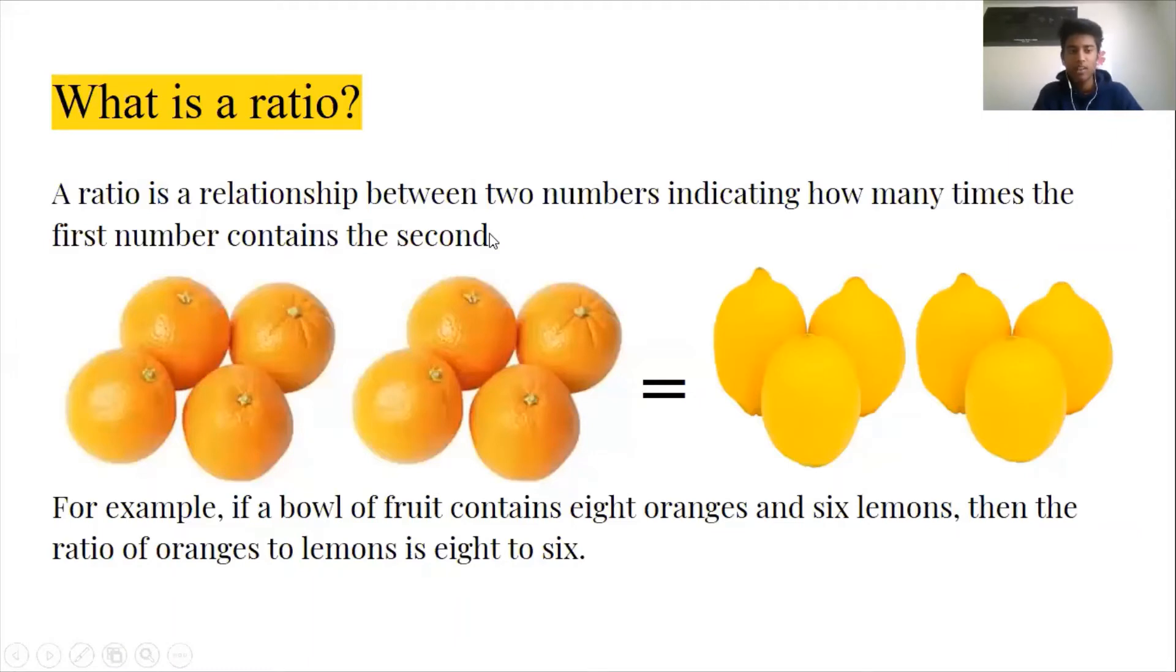So what is a ratio? A ratio is the relationship between two numbers, and just like a fraction, it shows how many times that second number can fit inside the first. So let's say we have 8 oranges and 6 lemons, and we want to define the ratio of lemons to oranges. Then we would just say that the ratio of lemons to oranges is 8 to 6.